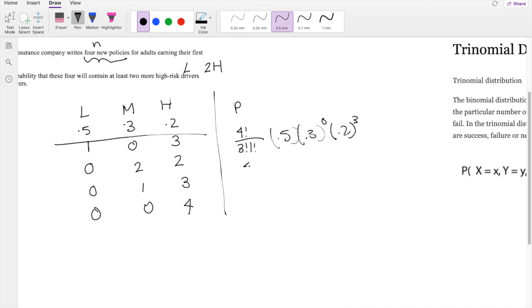This one would be 4 factorial over 2 factorial times 2 factorial. There is 0 low risk, there is 2 medium risk, and there is also 2 high risk. The third one would go like this where it's 3 factorial times 1 factorial, and there is 1 medium risk and 3 high risk. And the last one is 4 factorial over 4 factorial, and there is only 4 high risk.